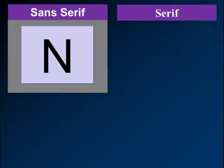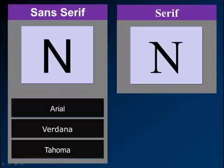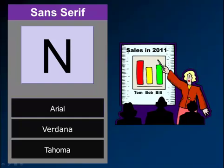There are two kinds of font: a sans serif font and a serif font. With a sans serif font, all of the lines are the same thickness. With a serif font, lines are different thicknesses — the red circle shows a serif, which is a little flick on the end of the font. The most common sans serif fonts are Arial, Verdana, and Tahoma. The most common serif fonts are Times New Roman, Palatino, Linotype, and Century. Use serif fonts for reports, but use sans serif fonts for presentations — they're just much easier to see on a screen.